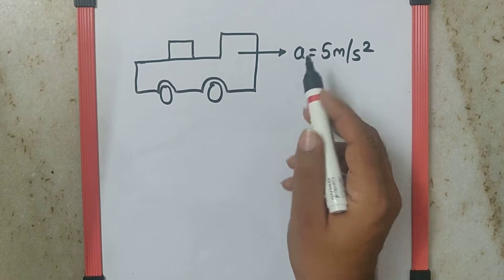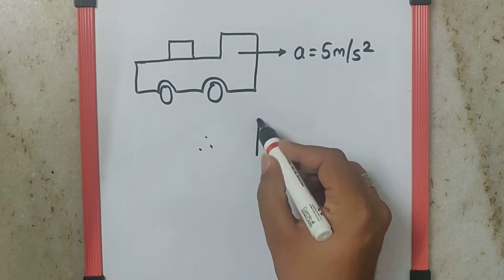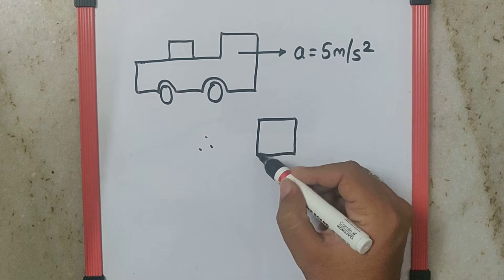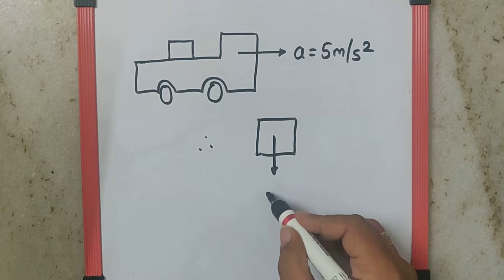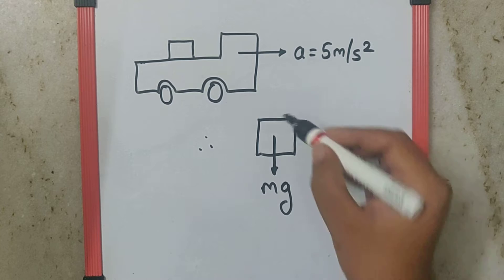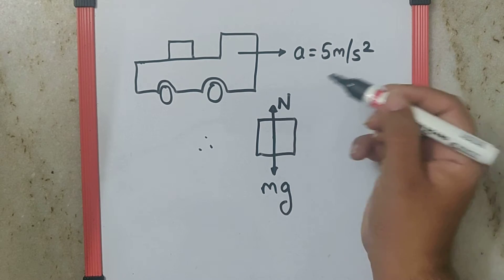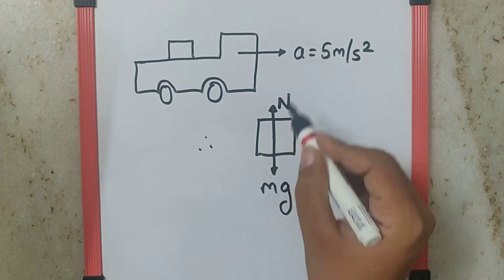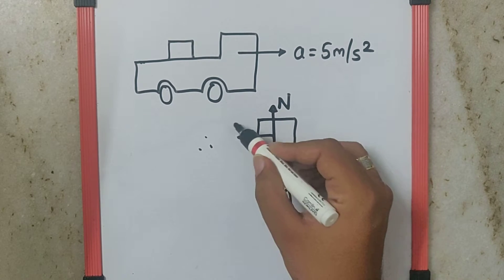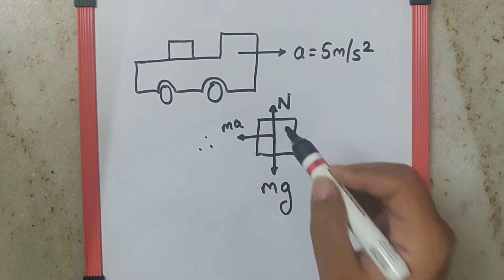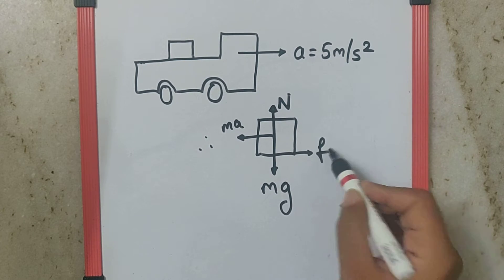If I draw the free body diagram of the block, I get a vertically downward force mg, a vertically upward normal reaction force that balances mg, the pseudo force ma due to the acceleration, and to prevent the motion, there will be friction.